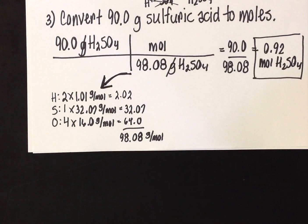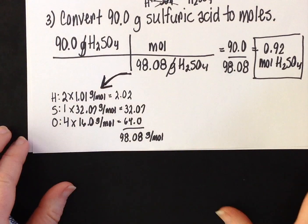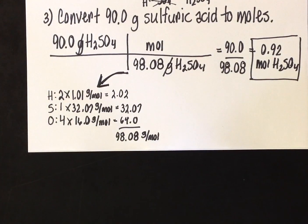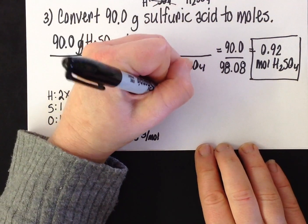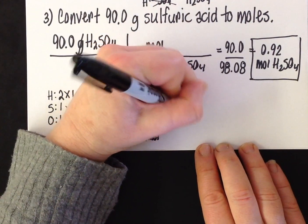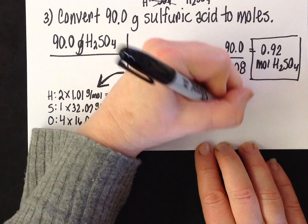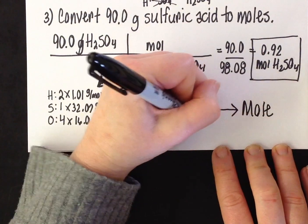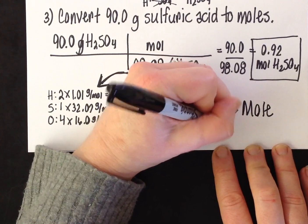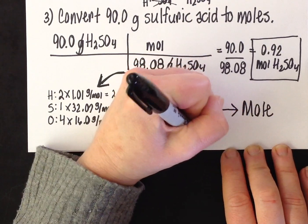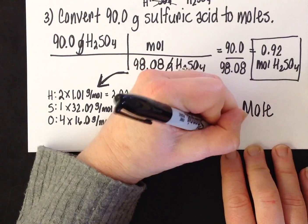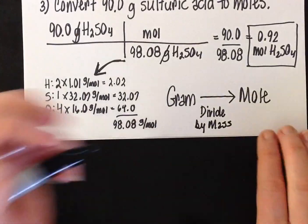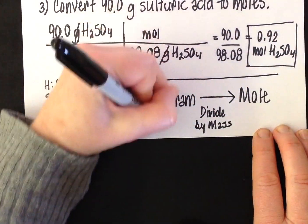So that's how you do gram to mole. Basically, when you go from gram to mole, here's another way for you to remember it: you are dividing by the molar mass from the periodic table. You can make yourself a little note—when you go from gram to mole, you are basically dividing by the mass. The mass. And that will help you remember how to do that little technique.